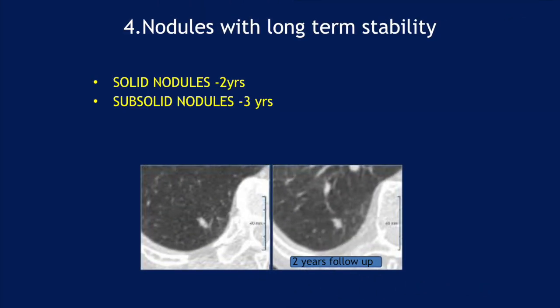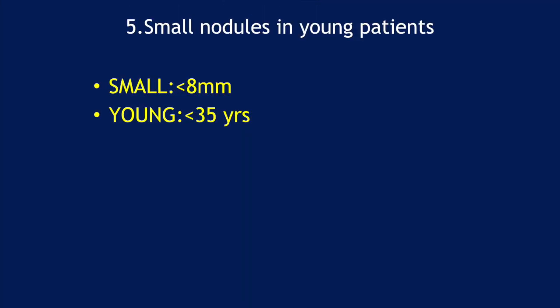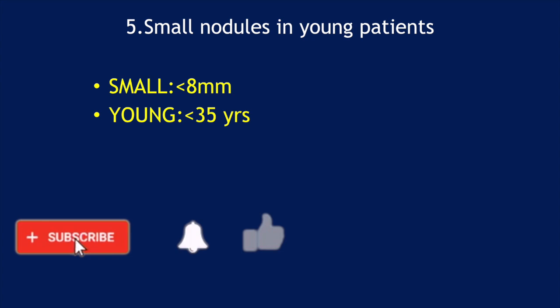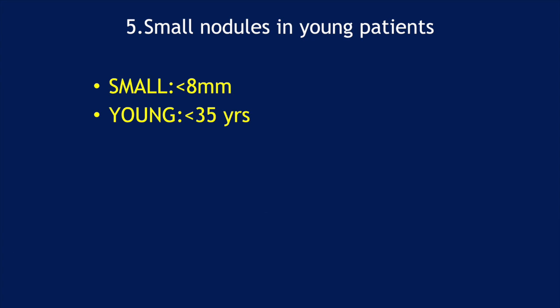Nodules with long-term stability: solid nodules, if stable for two years, we call them benign. Sub-solid nodules, if stable for three years — and nowadays they say five years — can also be called benign. Small nodules in young patients: less than 8 millimeters in a patient less than 35 years of age can be called benign. Once we have called a nodule benign, we have nothing to worry about.